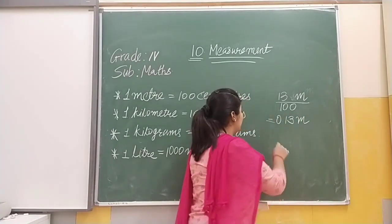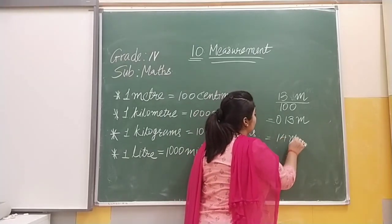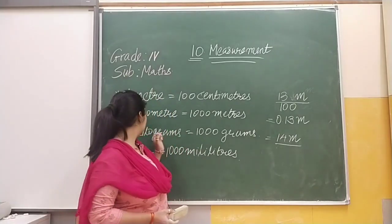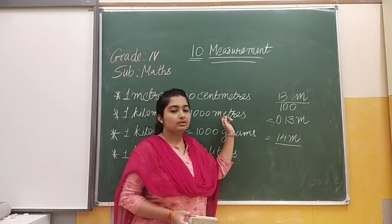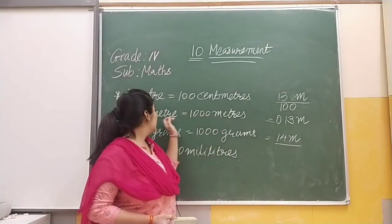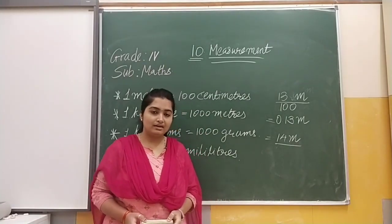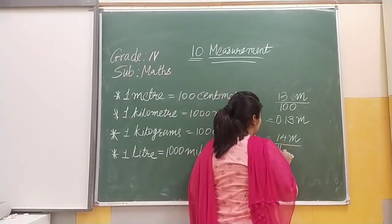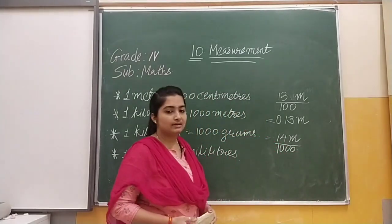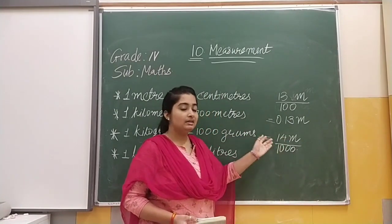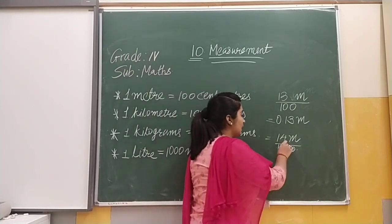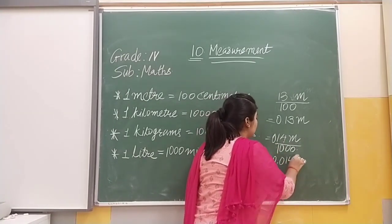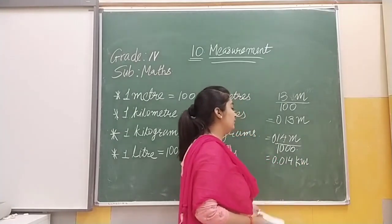Same way, suppose you are given 14 meters and you need to convert it into kilometers. Since 1 kilometer = 1000 meters, to convert meters into kilometers we divide by 1000. Using the concept of decimals, since there are 3 zeros, we move the point 3 places. So 14 divided by 1000 gives us 0.014 kilometers.